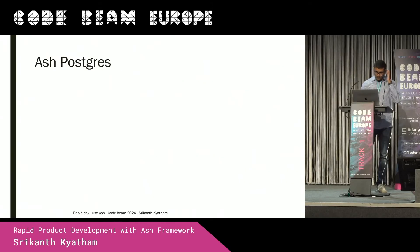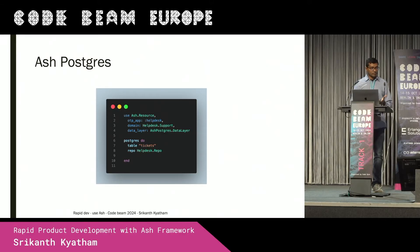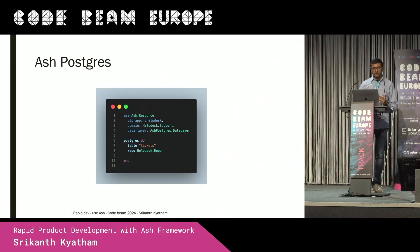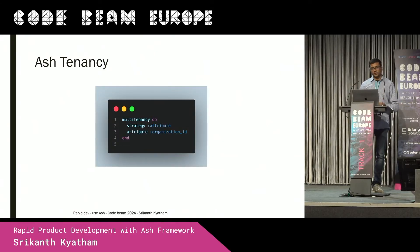To make your resource persistent, you write a Postgres block which takes a table and a repo, and you specify that the data layer is AshPostgres. There are also ETS and Mnesia data layers, though my preferred choice is Postgres. For multi-tenancy, you have a multi-tenancy block where you specify your strategy. Two strategies are supported: schema-based for Postgres, and attribute-based, which works for all data layers.